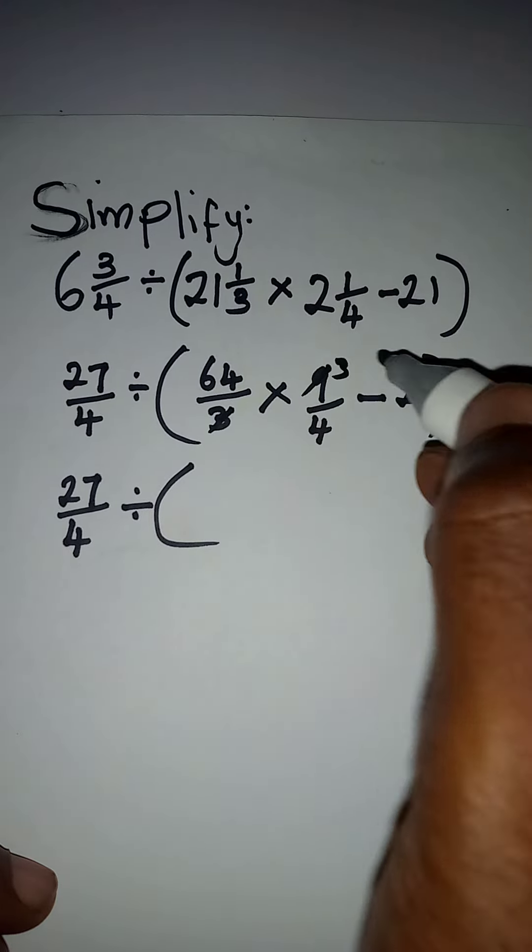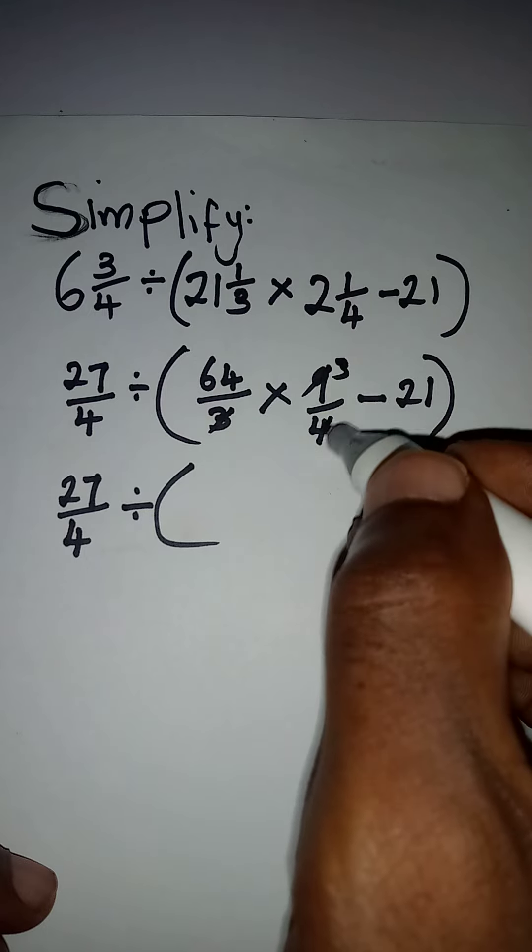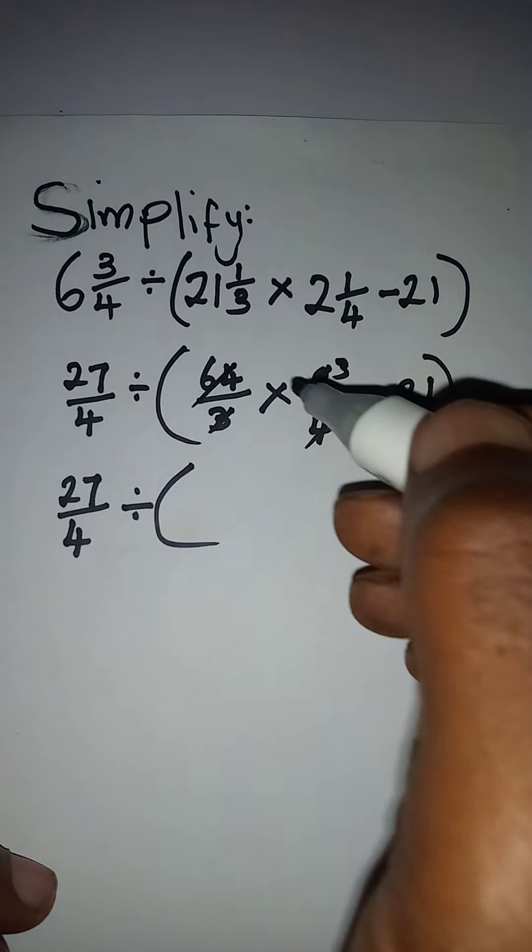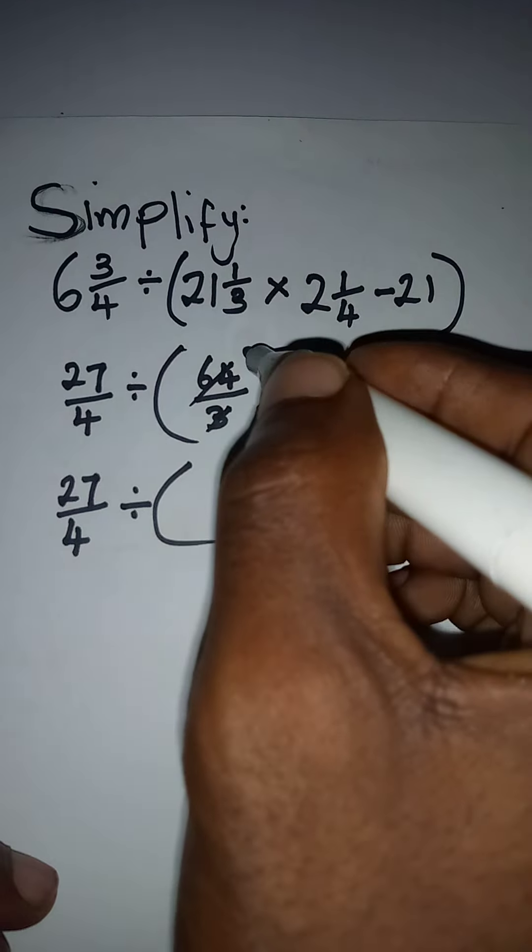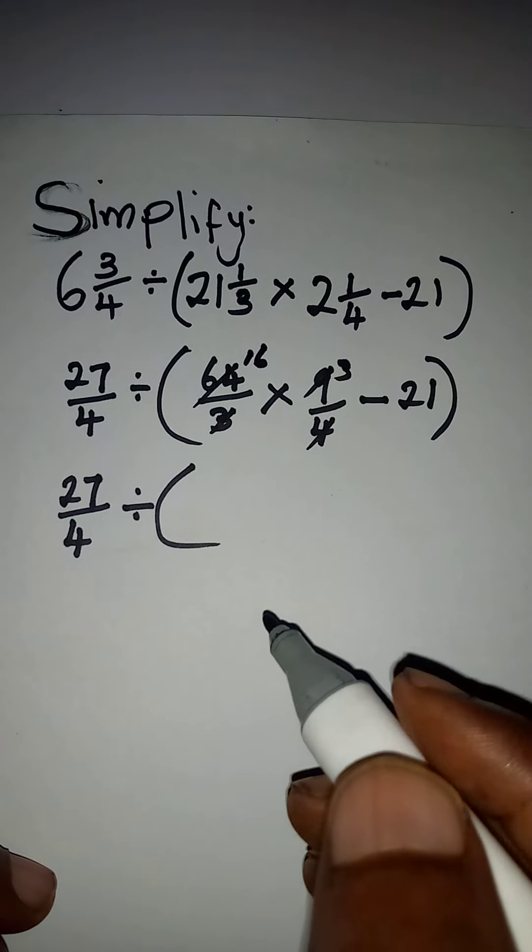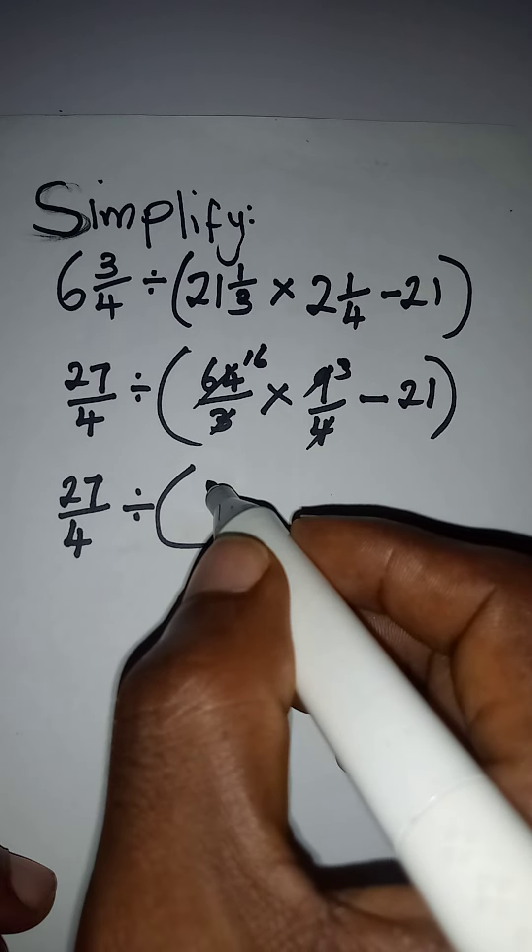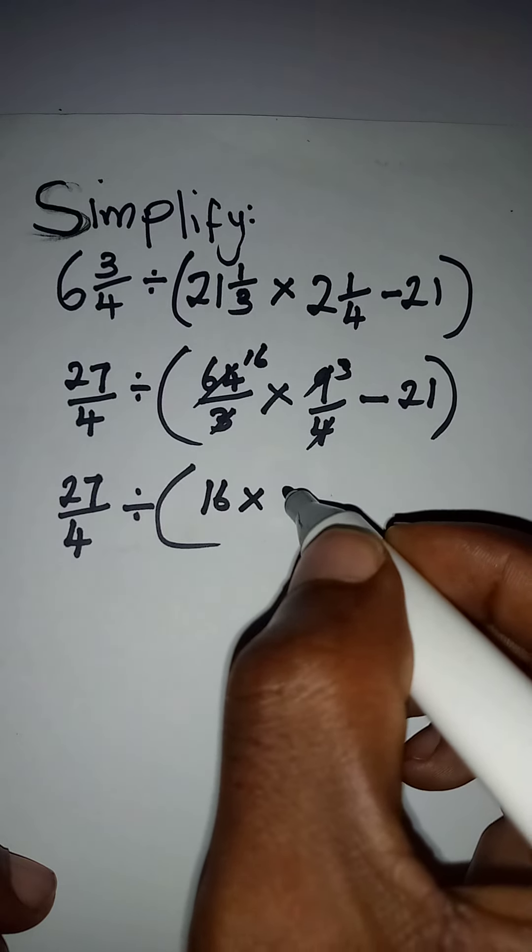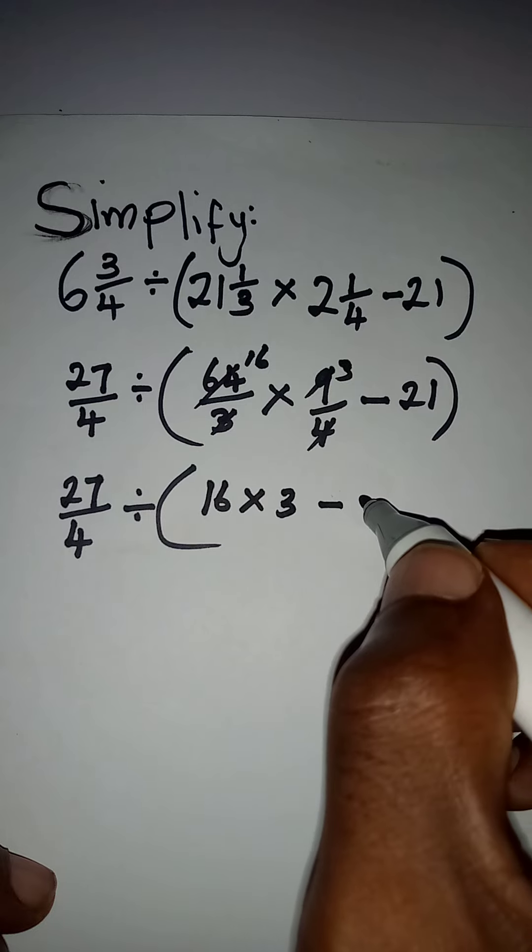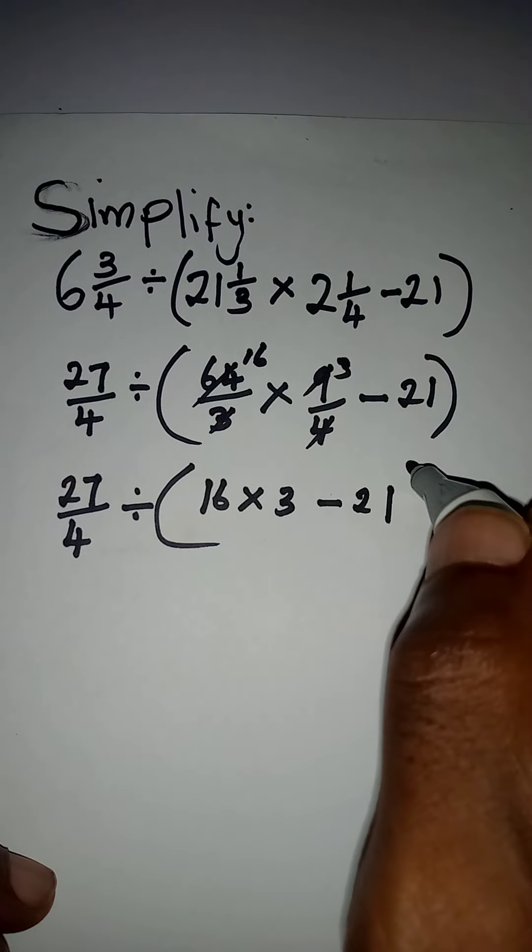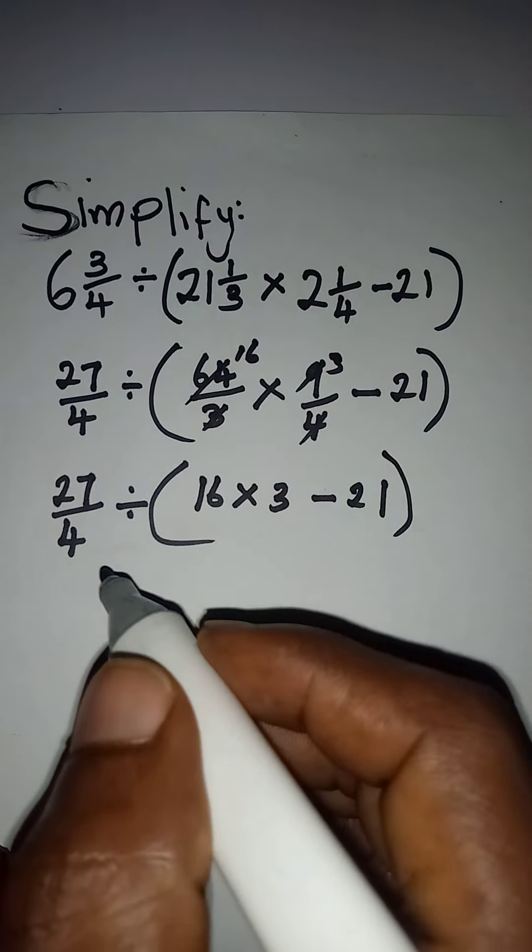and I'll have 3 over there. Now 4 can go here and I'm going to have 16. So if I take another step, it means that I will have 16 times 3 minus 21. Okay, so close this bracket.